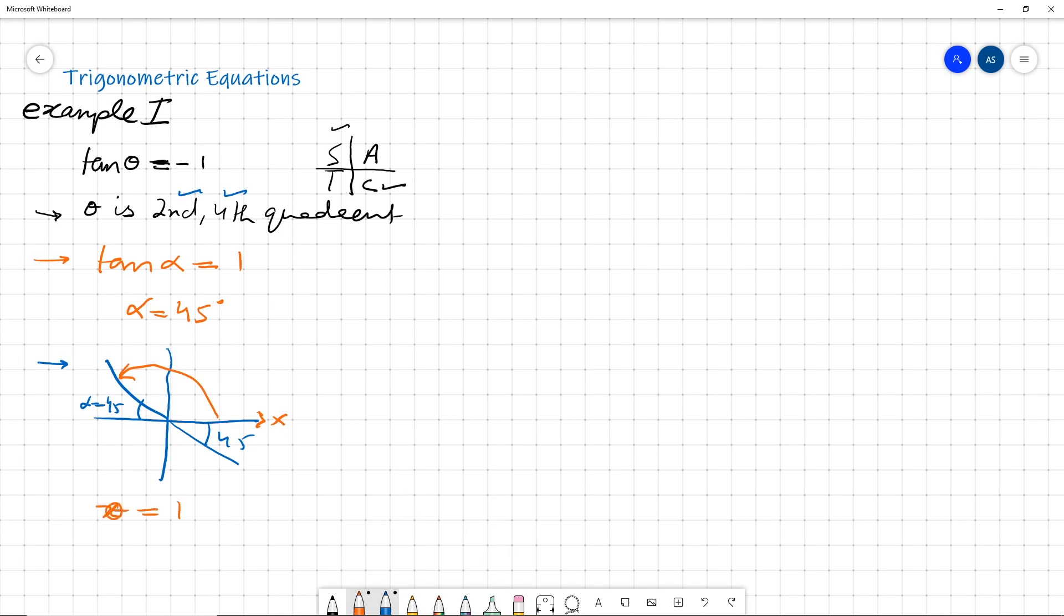For the next example, the first step is the same: identify the quadrants. Cos theta is 0.46, which is positive in the first and in the fourth quadrant, so theta is in either the first or fourth quadrant.